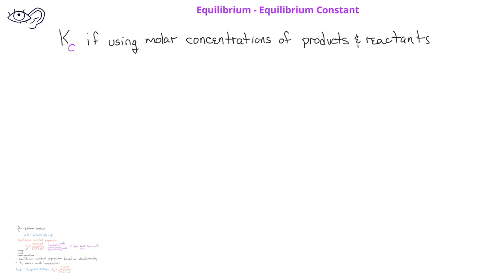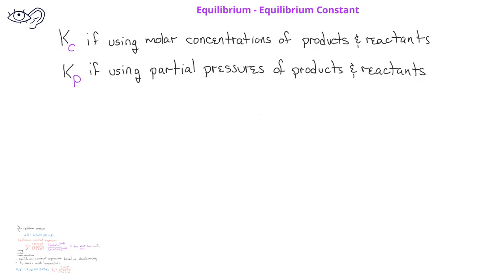However, when we have a gas phase reaction, we could also use the partial pressures of the reactants and products. In that case, instead of a C subscript for the equilibrium constant, we use a P subscript to indicate that we're obtaining the equilibrium constant from the partial pressures of the reactants and products. Because of this, we need to indicate what the relationship is between K sub C and K sub P.